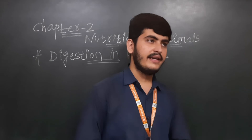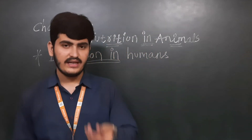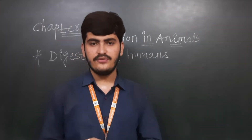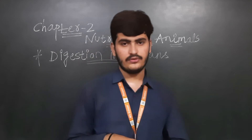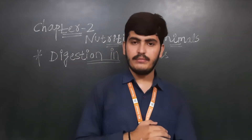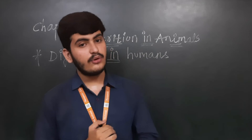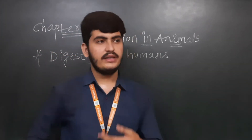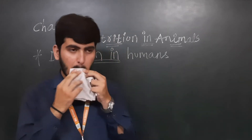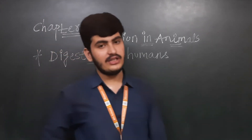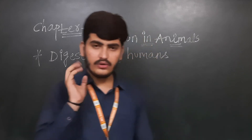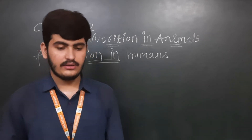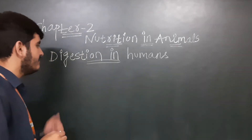The digestive system starts from the mouth. As we eat food, we take it in through the mouth, it gets digested, and we utilize it. We have covered the mouth and buccal cavity, the different types of teeth and their functions, the total number of teeth, and also the food pipe — the esophagus. In this video, we are going to learn about the stomach.